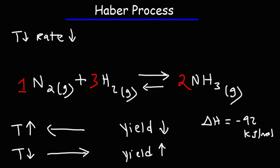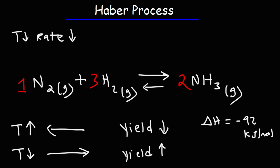So lowering the temperature too much is going to slow down the reaction, and if you increase the temperature too much, it will decrease the yield of ammonia. There is a sweet spot in which we can get the maximum yield of ammonia. The temperature that chemists decide to use for this reaction is around 450 degrees Celsius — not too high, not too low, but just the right temperature to maximize the yield of ammonia.